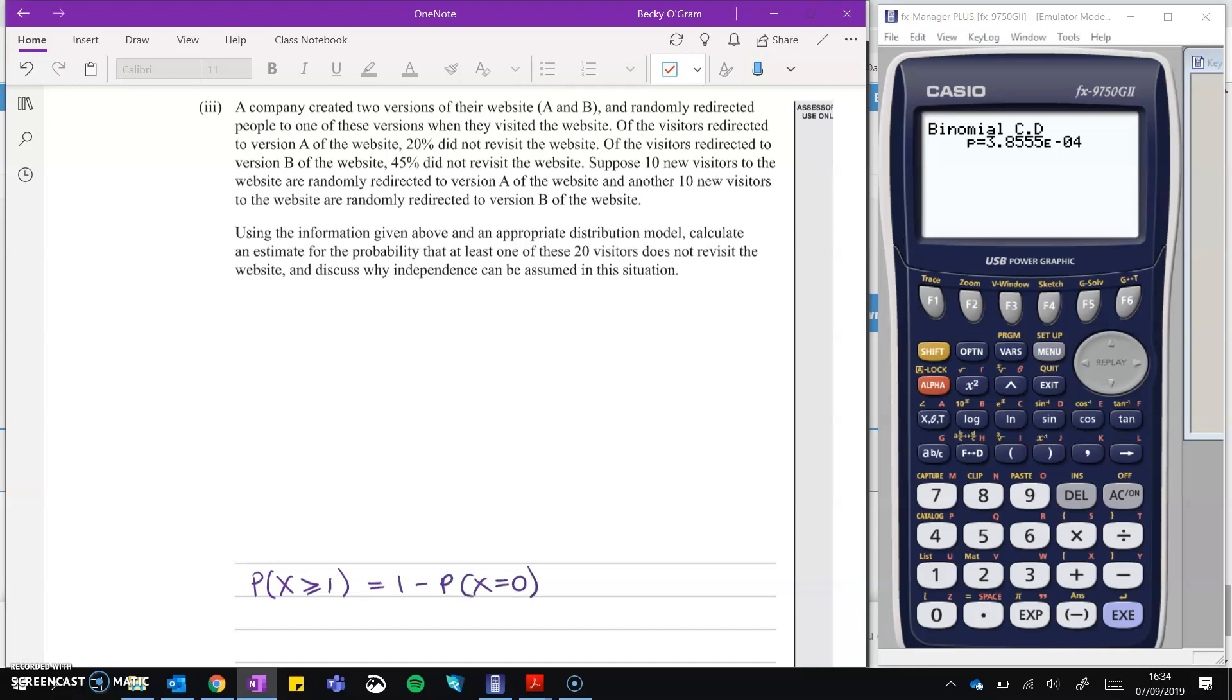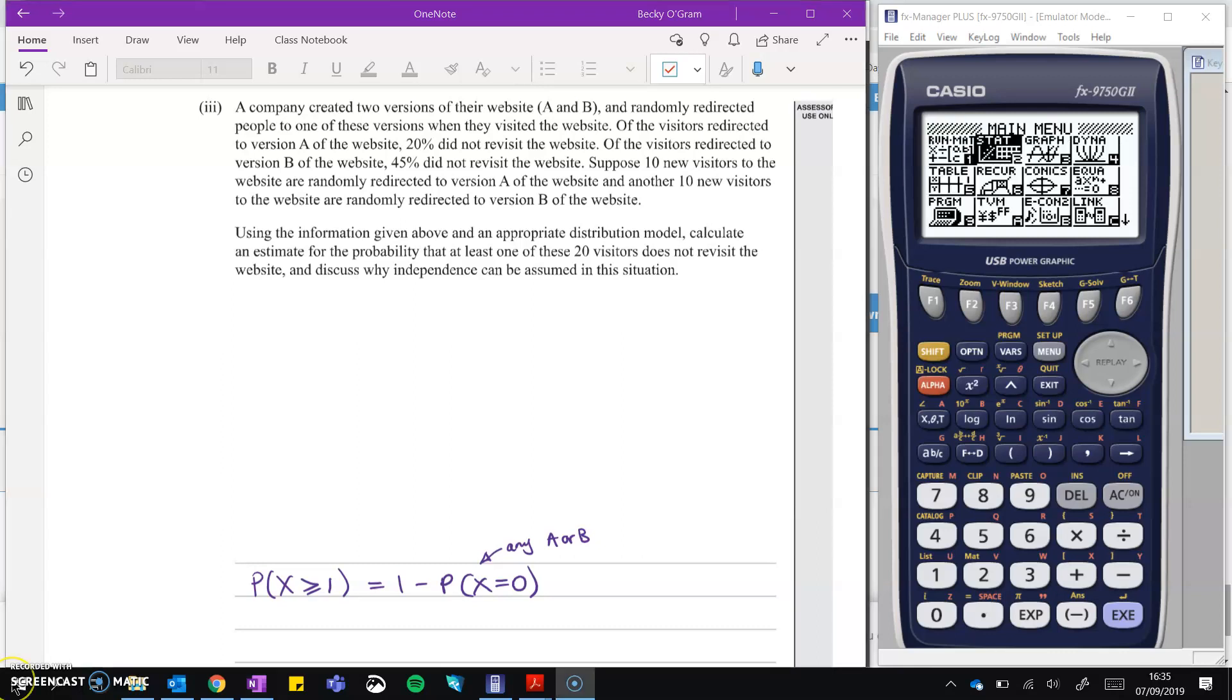So that's going to be one minus the probability that X equals zero. So we want to know what's the chance of them not revisiting, no matter which version they went to. So this X that we're talking about is any of the visitors from either visiting version A or version B.